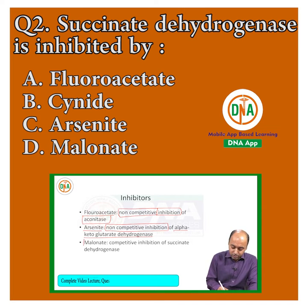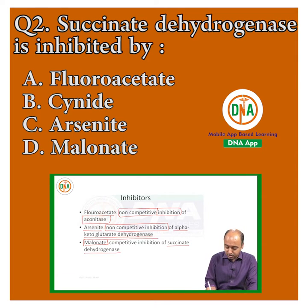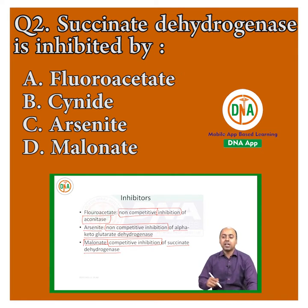Lastly, malonate inhibits succinate dehydrogenase, as we just mentioned, and the mechanism of inhibition is competitive inhibition.